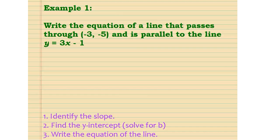Here is our first example. Write the equation of a line that passes through negative 3, negative 5 and is parallel to the line y equals 3x minus 1. First, identify the slope — the slope of the given line is 3. Now find the slope of the parallel line: since parallel lines have the same slope, the slope of the parallel line is also 3.